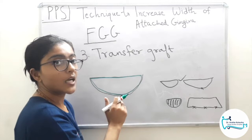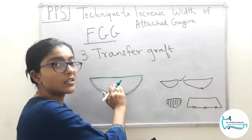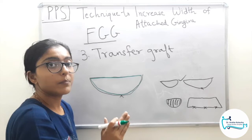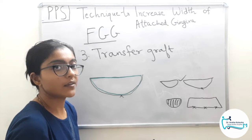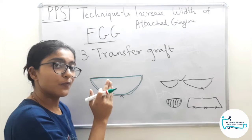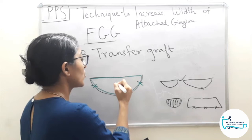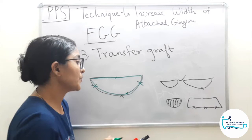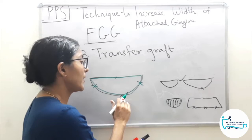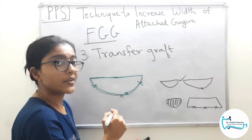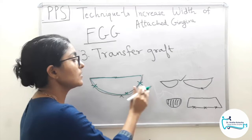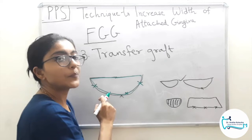Once the recipient site is free of any blood clots, bring the graft onto the recipient bed. Since measurements were taken by foil template, it will conform to the shape and size. Before suturing, press the graft firmly against the recipient bed to avoid any dead space, as dead space hinders vascularity. Suturing: laterally with the lateral borders of the recipient bed in the mesiodistal direction, and apically with periosteal sutures.